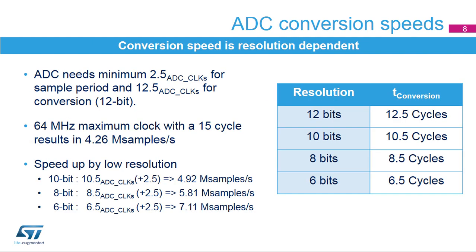The ADC needs a minimum of 2.5 clock cycles for sampling and 12.5 clock cycles for conversion. With a 64 MHz ADC clock, it can achieve 4.27 megasamples per second.